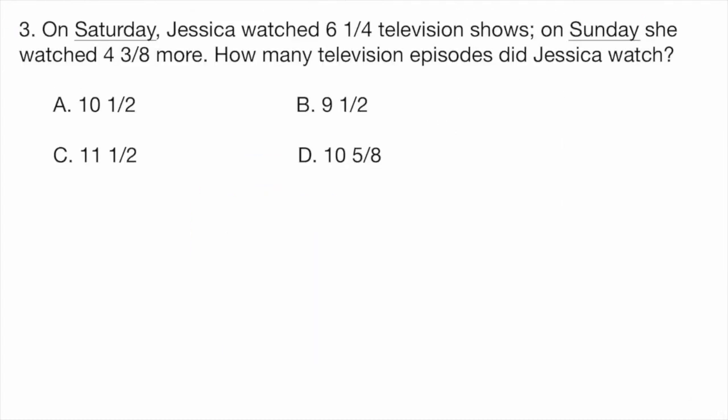Question three. On Saturday, Jessica watched six and one-fourth television shows. On Sunday, she watched four and three-eighths more. How many television episodes did Jessica watch? A, 10 and one-half. B, nine and one-half. C, 11 and one-half. Or D, 10 and five-eighths.